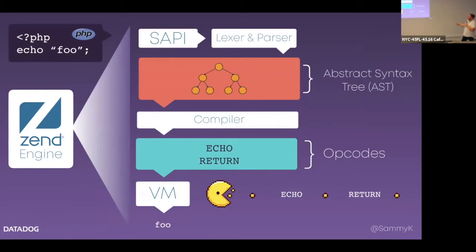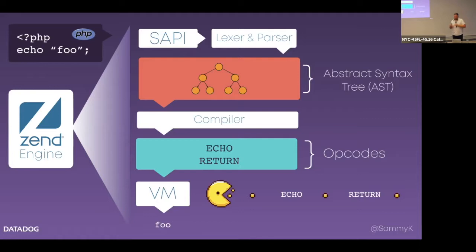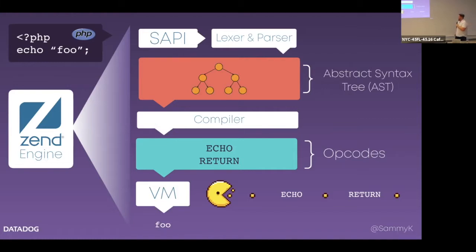PHP does have an int main, but it technically has two. The first comes from the SAPI layer — the server API layer. There are a number of SAPIs that exist in core: the Apache 2 handler, FPM, the CLI SAPI. Before PHP 7, there were tons of SAPIs — the directory was just full of old SAPIs that hadn't been used since the 90s. In PHP 7 they ripped out a lot of those. When you use the CLI, for example, you'll go through the CLI SAPI first and the PHP script gets sent to the SAPI, which then hands it off to the lexer and parser.